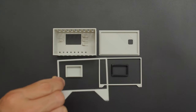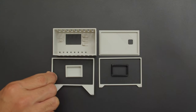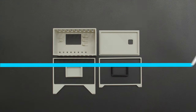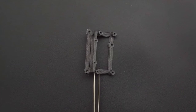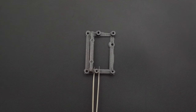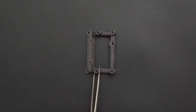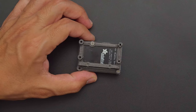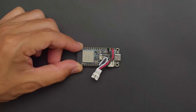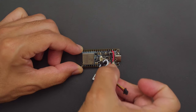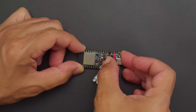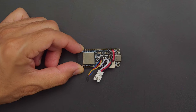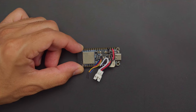Download and 3D print the parts in your favorite filament to build the snap-fit enclosure. Start by mounting the PMSA-003i sensor to the 3D printed bracket with machine screws. A short Stemma QT cable connects the feather to the sensor, and a JST cable plugs into the NeoPixel stick.